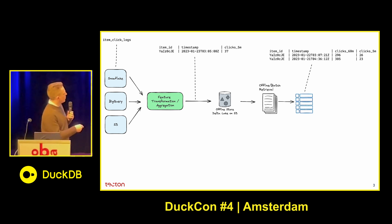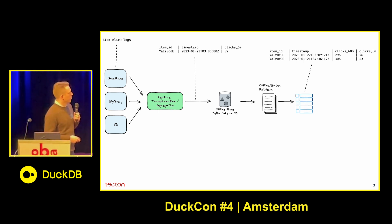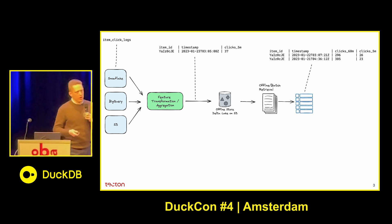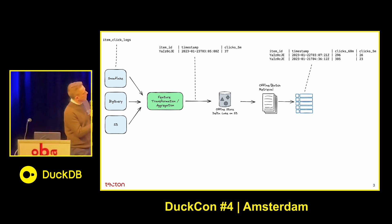Once we have that, we store it in what we call the offline store, which is implemented as a Delta Lake table that we store on S3. At some point later, a data scientist will come along — they're trying to train a model and need to generate a training dataset, which we do with this offline batch retrieval step.